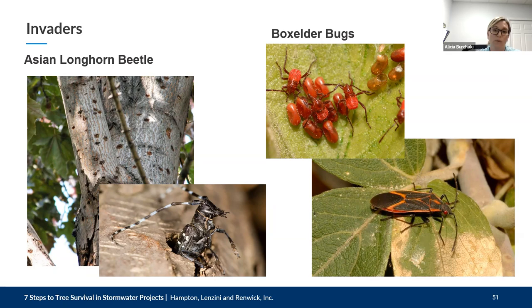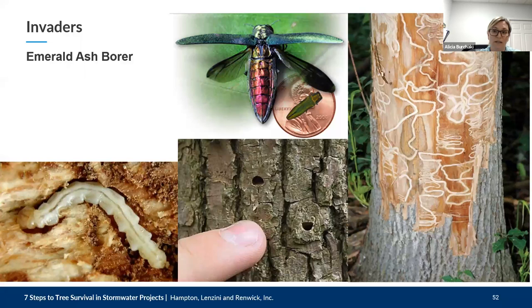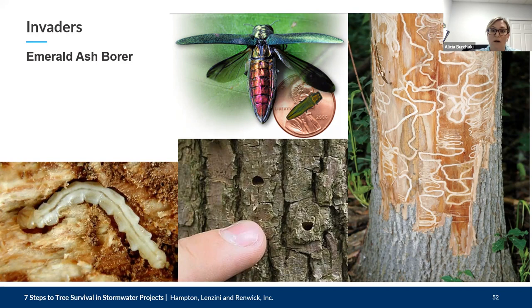Emerald ash borer — in the bottom middle picture you can see the classic D-shaped exit hole we all know about. This is from Northeast Asia, likely introduced in the 1990s, and is now found in 14 other states and two Canadian provinces. The infested range is expanding rapidly. Some municipalities that didn't have much variation in their tree planting lost all of their parkway trees in large numbers. All 16 native ash species are susceptible — green ash seems to be most affected. Chemical treatments do seem to be helping, so hiring a company that can do that could be beneficial.